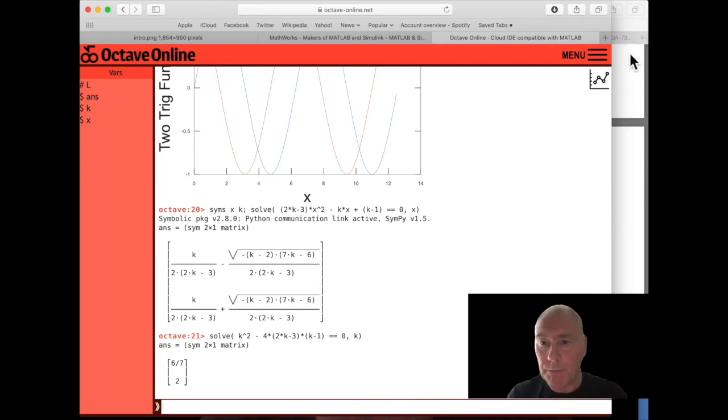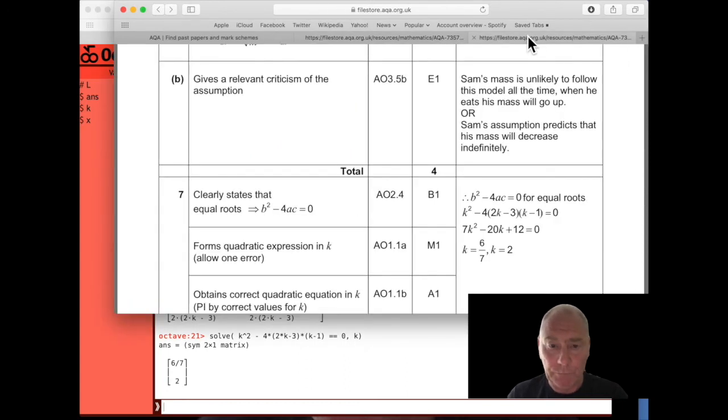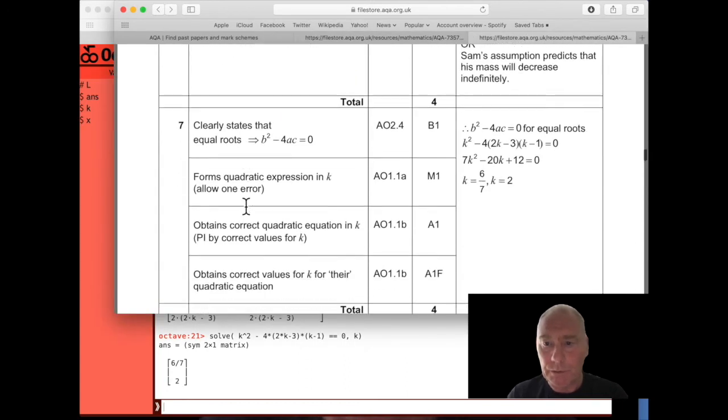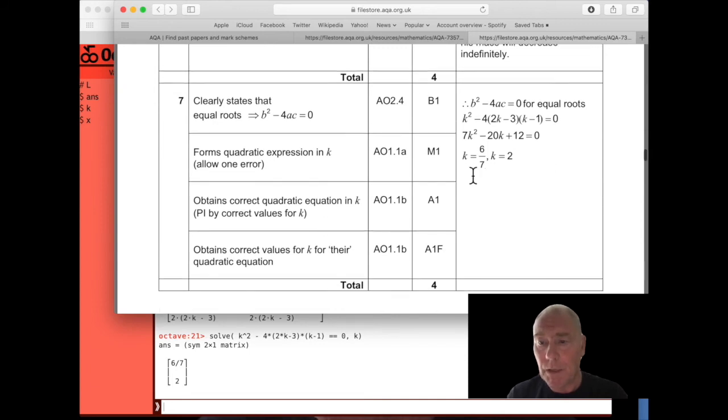So let's go to the exam paper. Now we'll look at the solution. So here is the mark scheme for question seven. Here is the method. We want that b squared minus 4ac equals zero. And here is the answer. k equals six over seven and k equals two, which agrees with what we computed. I hope you're starting to see the value of having a computer around. Now you don't have computers in exams, so there's no substitute for being able to do this kind of thing. But being able to check your work is really useful. And sometimes these things are too complicated to do by hand, and we have to use computers.